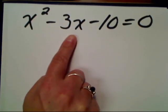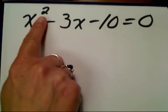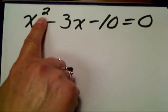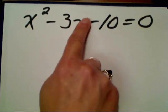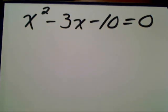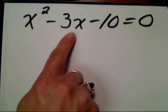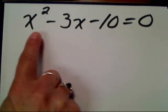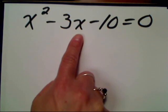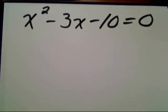You have to have an equation set equal to zero to use the zero product property. We don't have a product yet, so that's why we have to factor. We cannot solve when we have an X squared and an X together — we cannot combine those because they are not like terms. Like terms have the same variable raised to the same power. X squared has a power of two; X has a power of one. That's why you need to know how to factor.